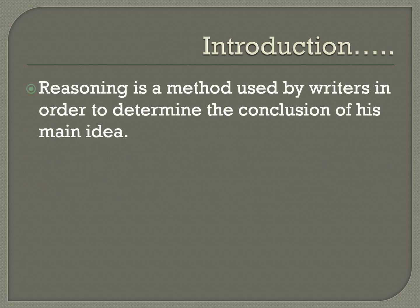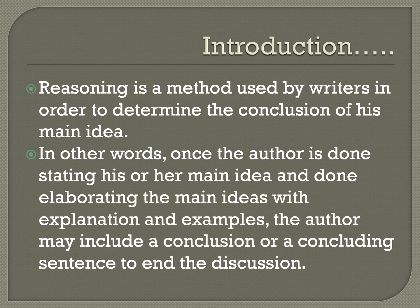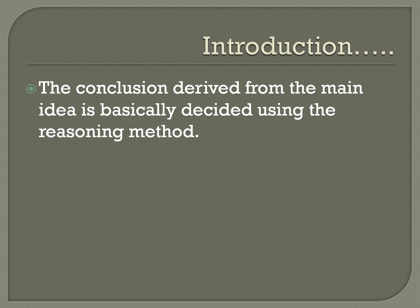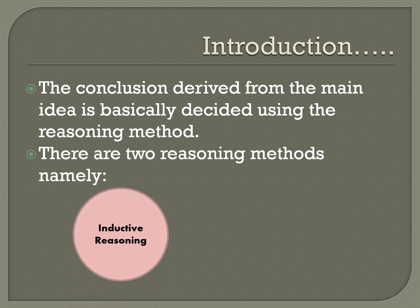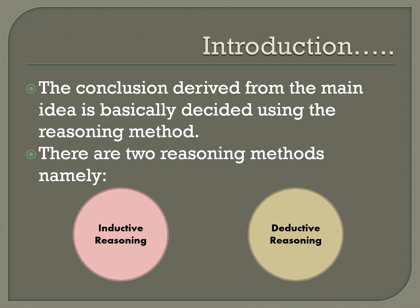Reasoning is a method used by writers in order to determine the conclusion of the main idea. Once the author is done stating the main idea and done elaborating it with explanation and examples, the author may include a conclusion or a concluding sentence to end the discussion. The conclusion derived from the main idea is basically decided using the reasoning method. There are two reasoning methods, namely inductive reasoning and deductive reasoning. These are two methods for a reader to use in order to decide what is the conclusion of the main idea stated by the writer in the passage.